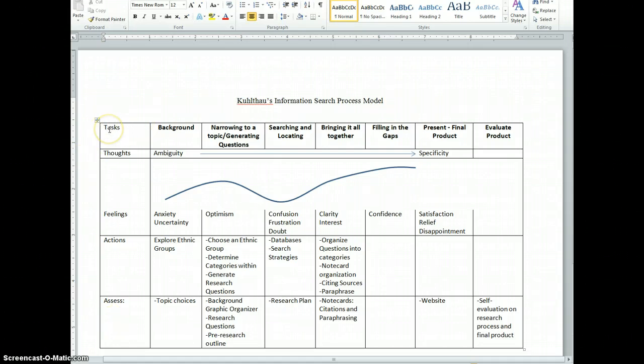First of all, there are different research tasks in the research process, and so we will go through every one of these tasks. First we'll gain background information, then we'll narrow to a specific topic and generate questions to guide our research.